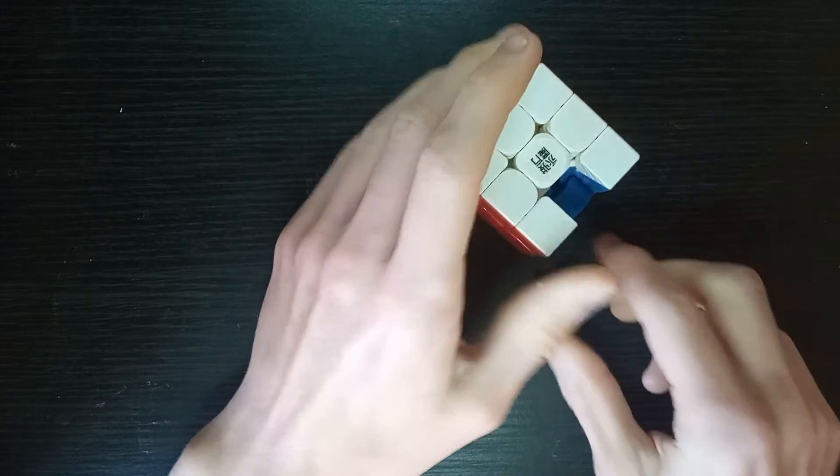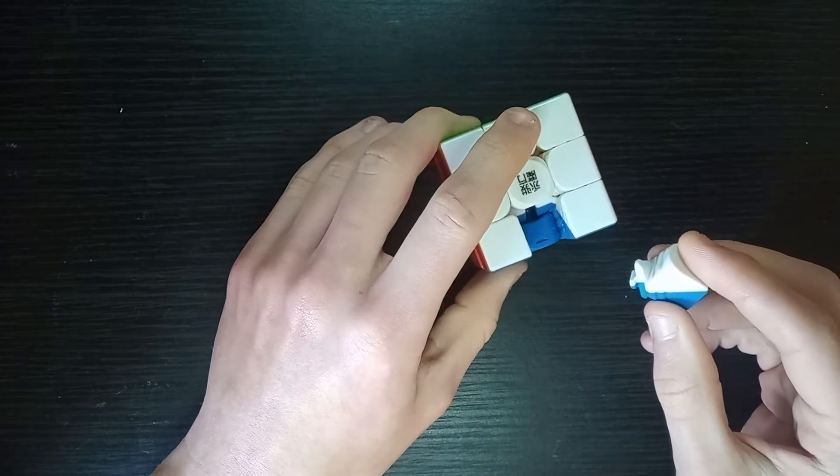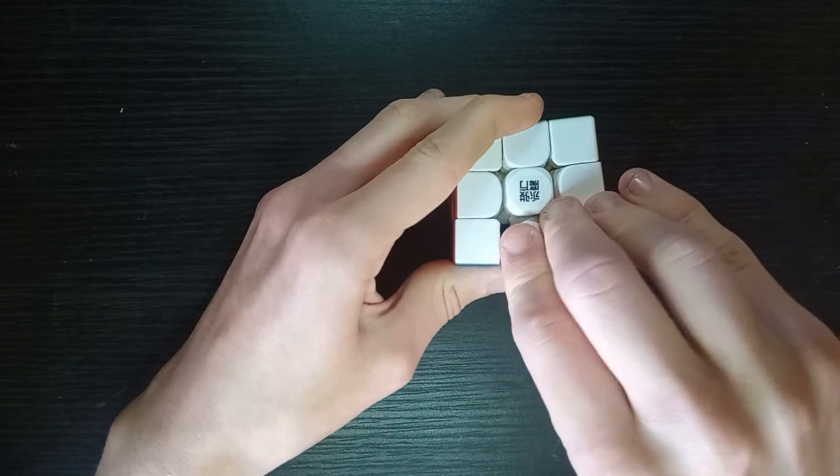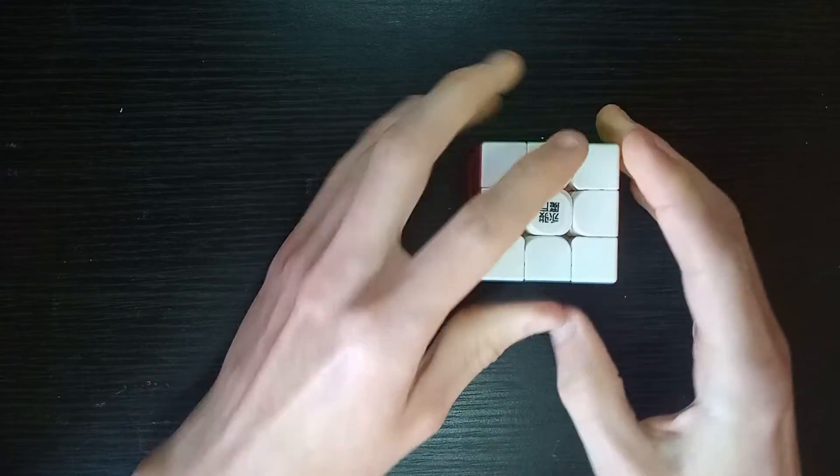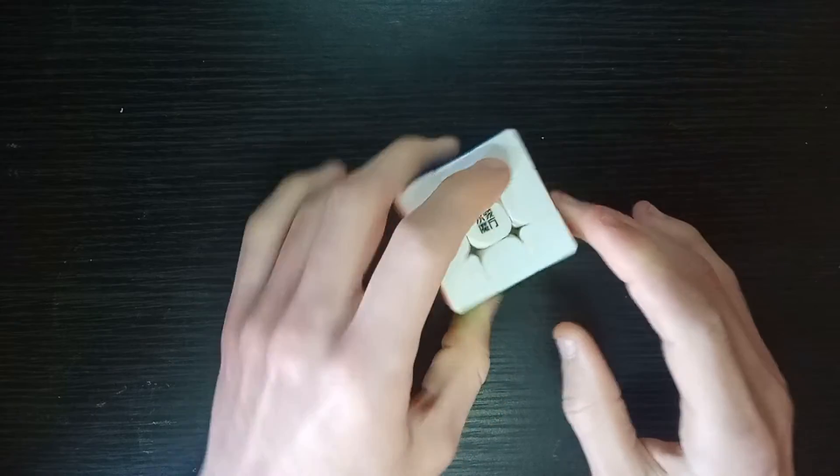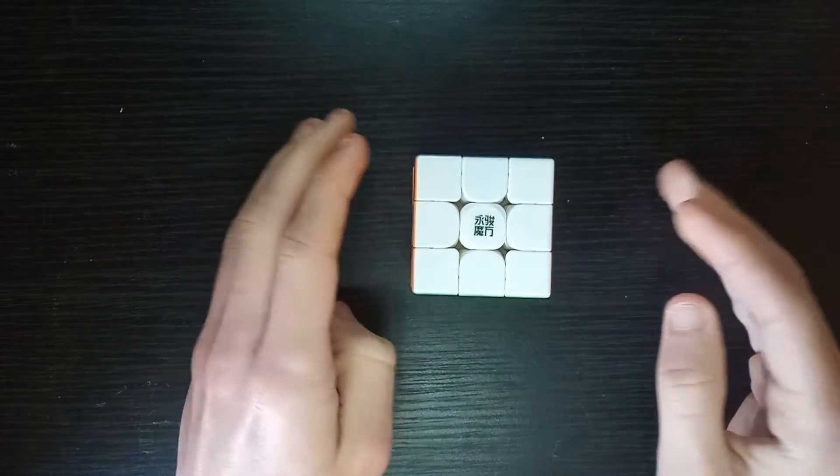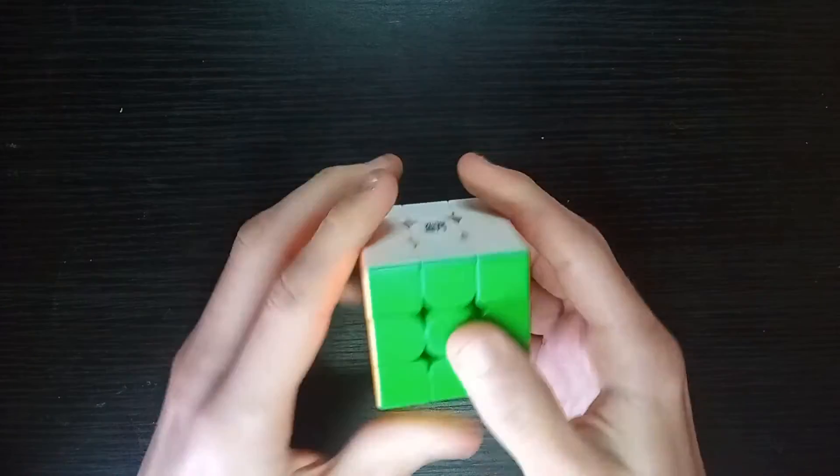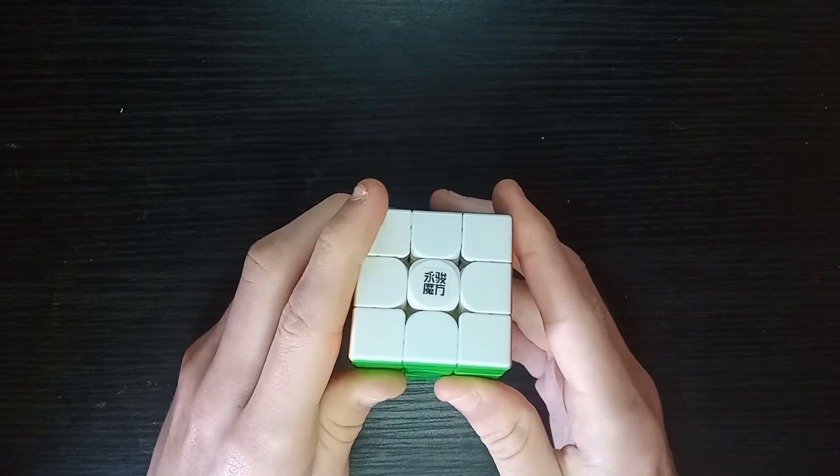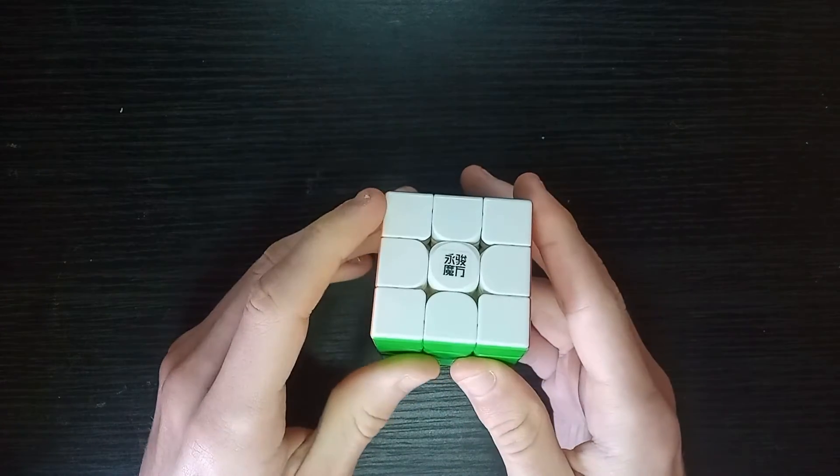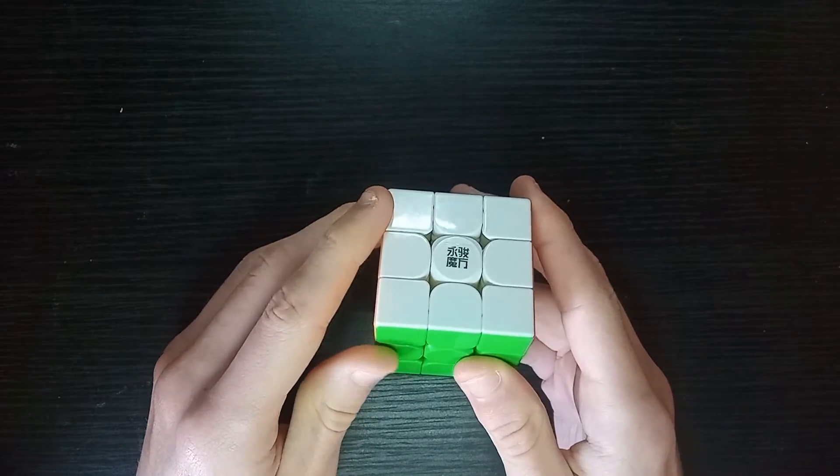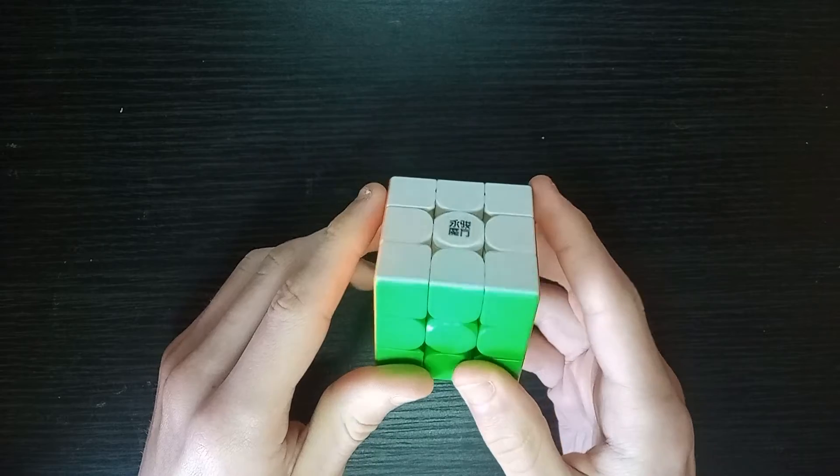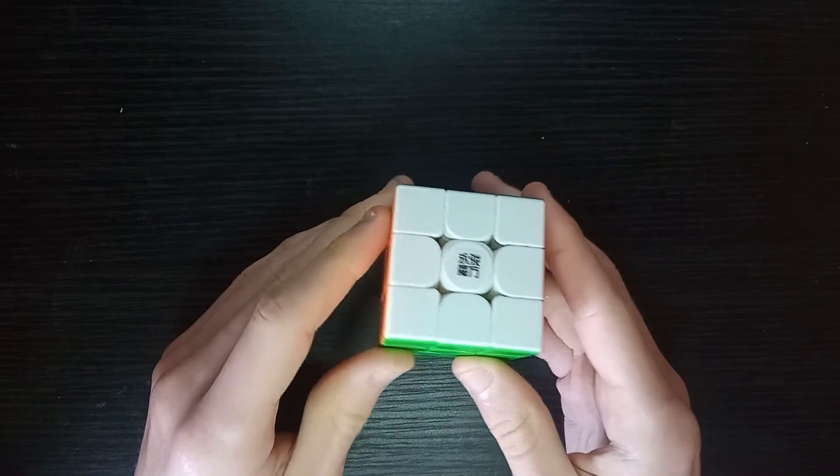I don't think there are any cubes that it really closely resembles. I presume it's somewhat resemblant of the Yulong V2M, but certainly not significantly. It is a new 3x3 design. So personally, I've been getting times, maybe 0.5 to 1 seconds below my average for standard 3x3 solving with this, which I think is purely the size.